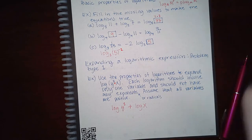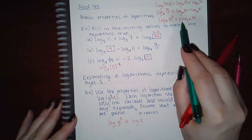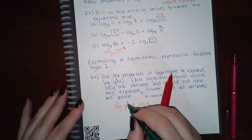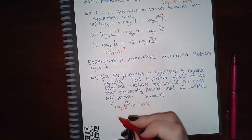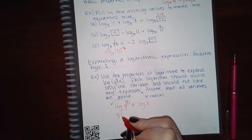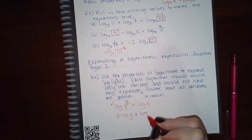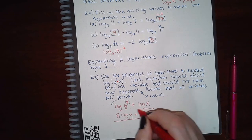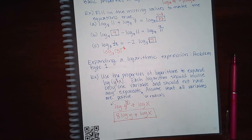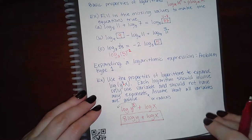Now I have each logarithm with only one variable, but I still have an exponent. So remember the power rule — if you have a power, it just has to go to the front. So this exponent of 8 is going to go to the front, which means my next expression is 8 log y plus log x. Now I have logs with one variable only and none of those arguments have exponents or radicals.